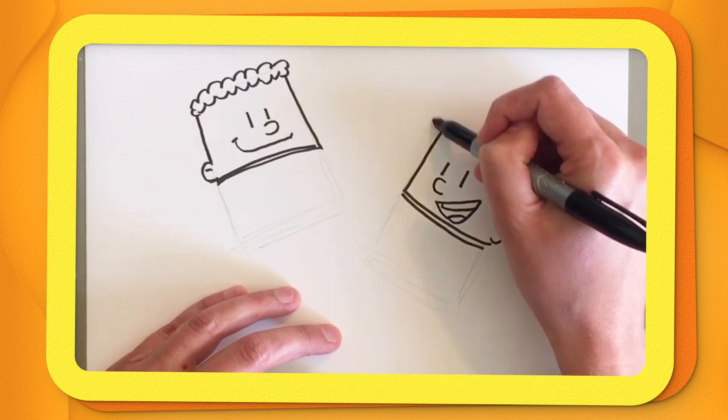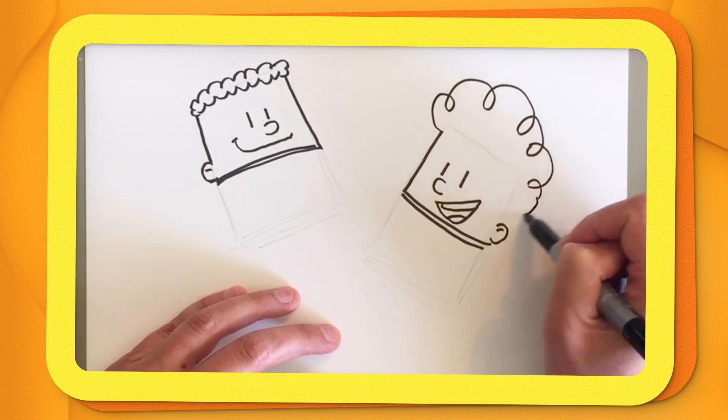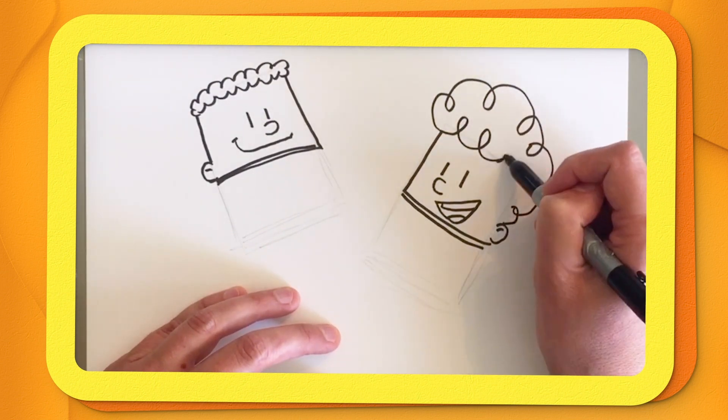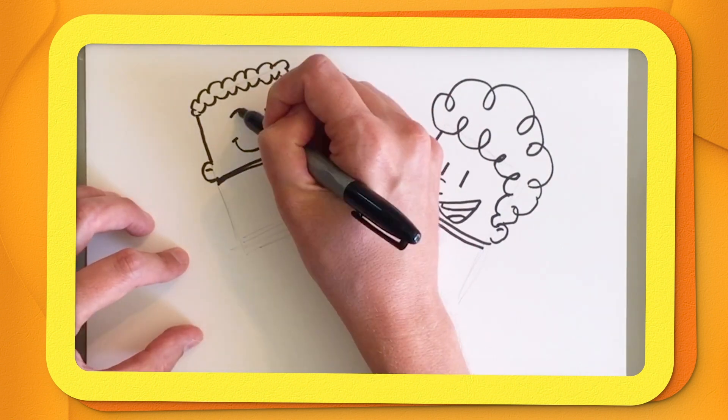Now Harold, on the other hand, has huge hair usually. But since he's wearing a space helmet, it's going to be just kind of bunched up inside his helmet.